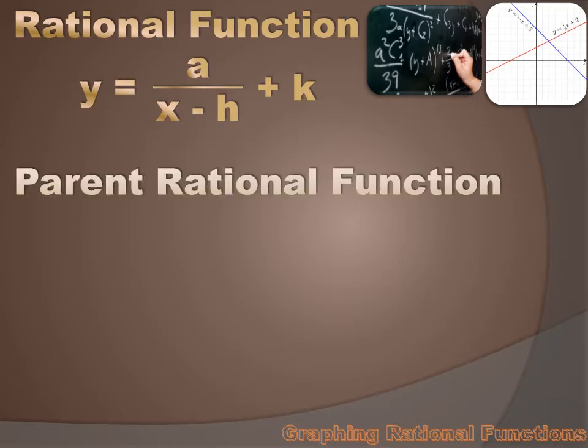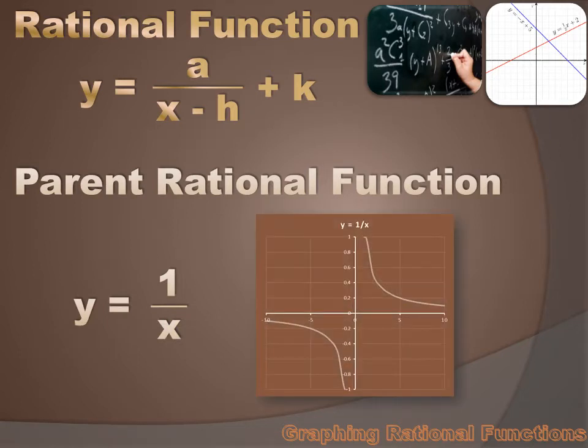The parent rational function is a simplified version of the generic rational function above. It's just y equals 1 over x. When we graph it, it looks like that. That's an inverse variation.